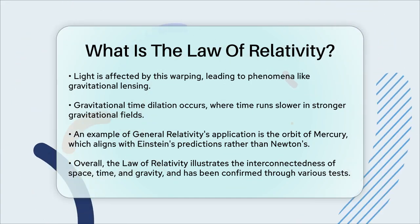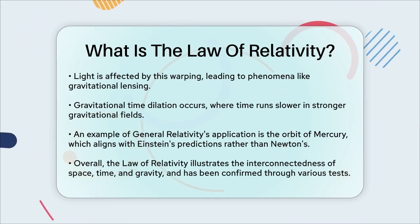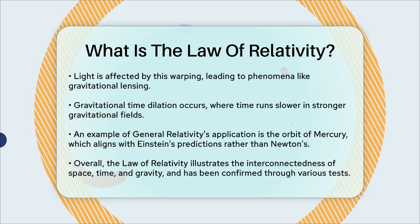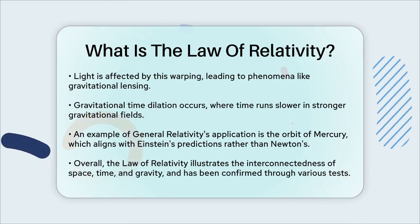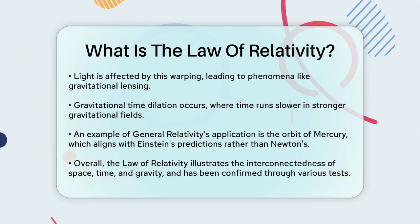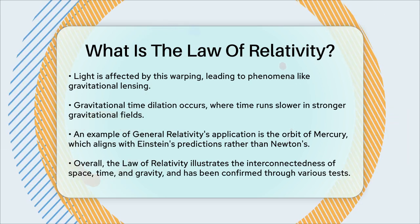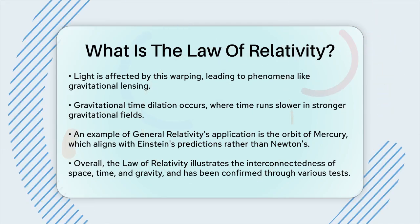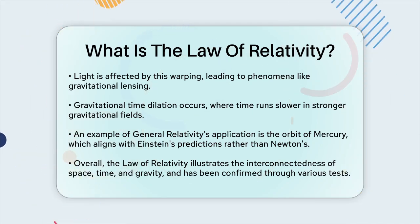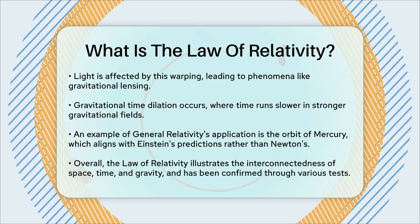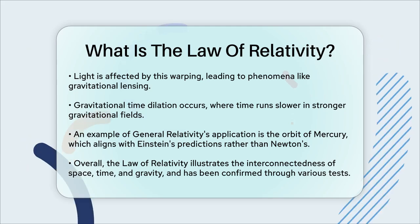In summary, the law of relativity is about how space, time, and gravity are intertwined. Special relativity shows us that space and time are relative and that the speed of light is constant, while general relativity explains how gravity is a result of the warping of spacetime by massive objects. These theories have been tested and confirmed numerous times, making them fundamental to our understanding of the universe.